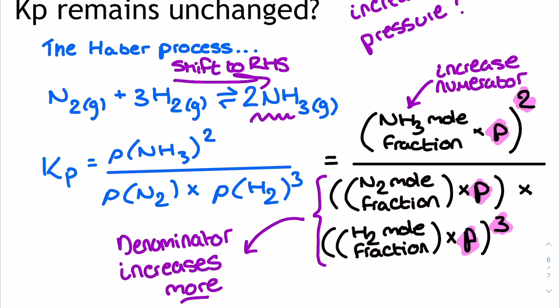the position of equilibrium is still, according to Le Chatelier's principle, going to shift to the right-hand side. This then increases the mole fraction of the numerator, and means that despite the increase in pressure, the Kp is restored, and overall is unchanged.